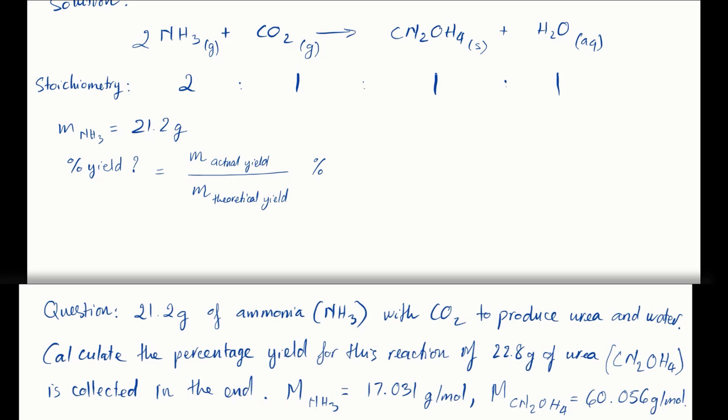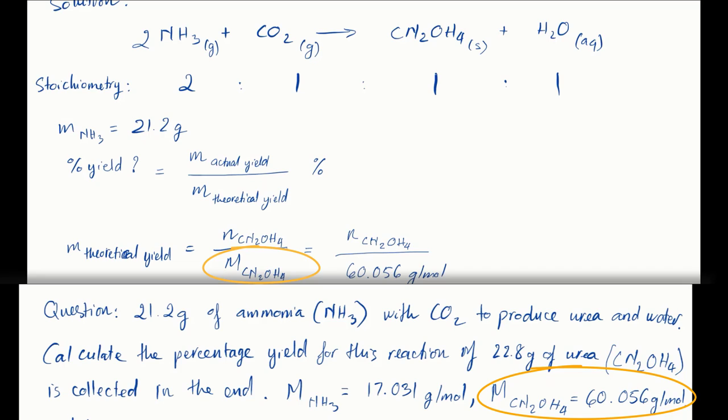Since you already got the mass of the actual yield, the easiest way to calculate this yield is to calculate the mass of the theoretical yield. Now the mass of theoretical yield is equal to the number of moles divided by molar mass. We know the molar mass from the question which is 60.056 grams per mole for urea. But we don't have the theoretical number of moles of urea. So we need to calculate that.